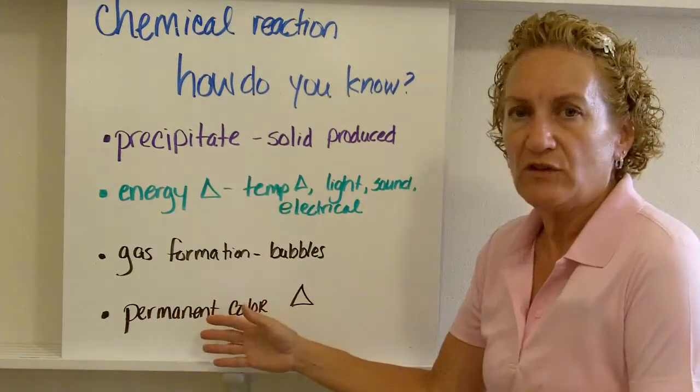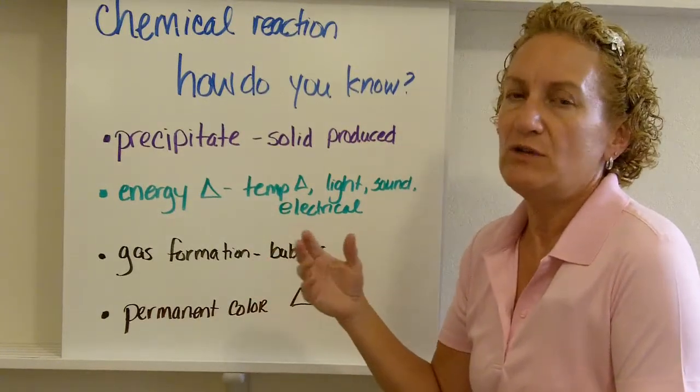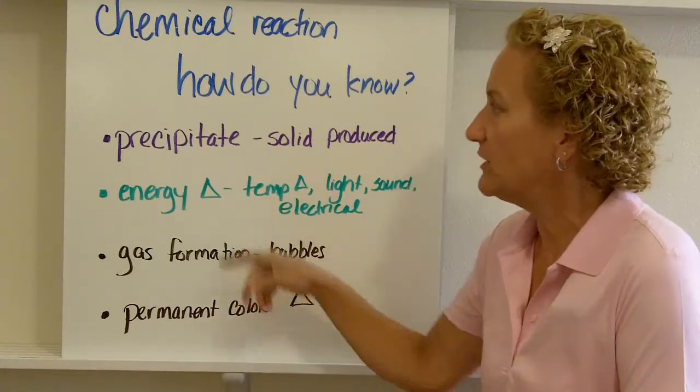Well, in basic chemistry, we look for four different things. And you don't need all four of these. You can have one, two, three, or all four. But if you even see one, that means a chemical reaction has occurred. So let's go ahead down the list.